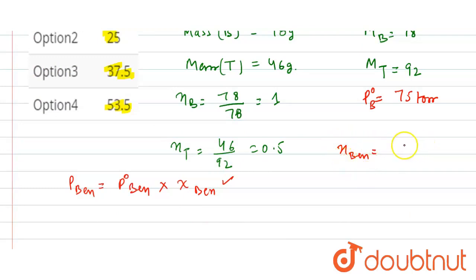Number of moles, which is 1, divided by number of moles of benzene plus number of moles of toluene. So it is 1 plus 0.5, so it is equal to 1 by 1.5.